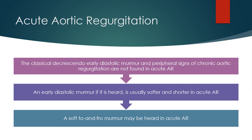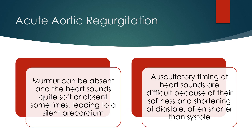The classical decrescendo early diastolic murmur and peripheral signs of chronic aortic regurgitation are not found in acute AR. An early diastolic murmur, if heard, is usually softer and shorter. A soft to-and-fro murmur may be heard. Murmur can be absent and the heart sounds quite soft or absent, sometimes leading to a silent praecordium. Auscultatory timing of heart sounds is difficult because of their softness and shortening of diastole, often shorter than systole.